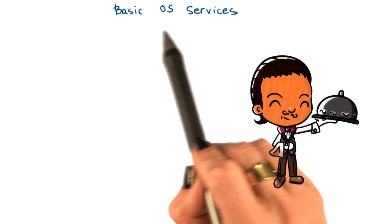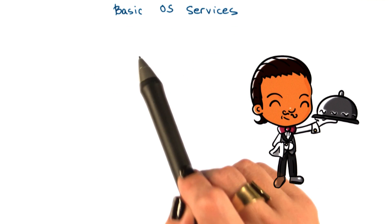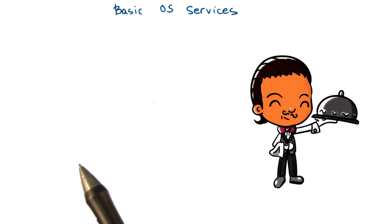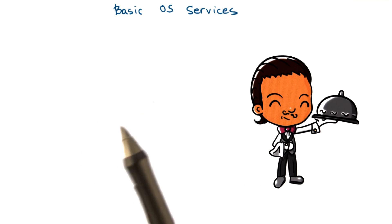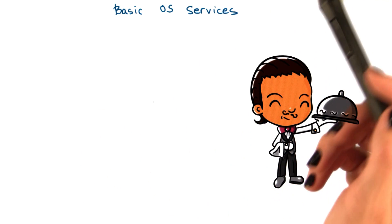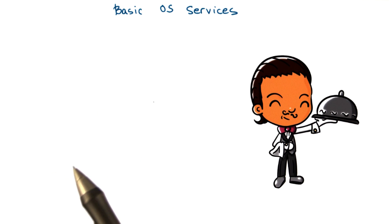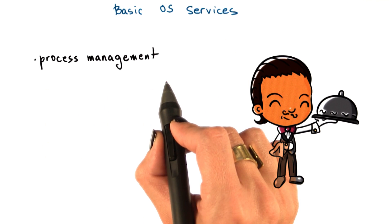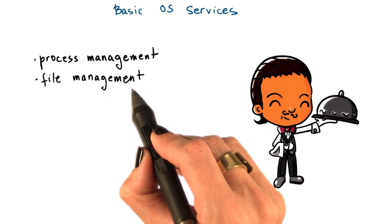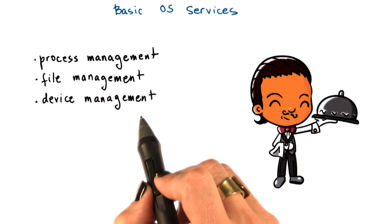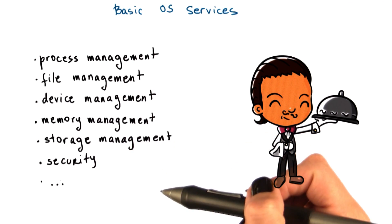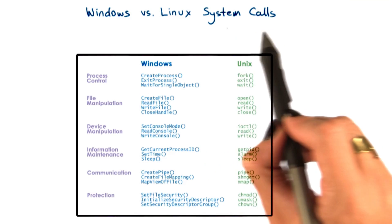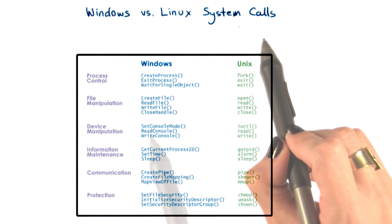In summary, the operating system will have to incorporate a number of services in order to provide applications and application developers with useful types of functionality. This includes process management, file management, device management, and so forth. Operating systems make all these services available via system calls.